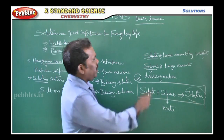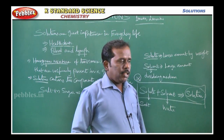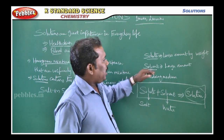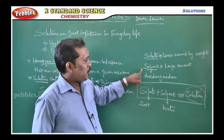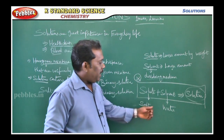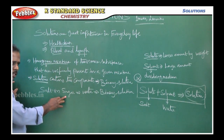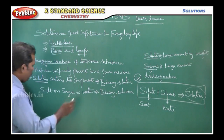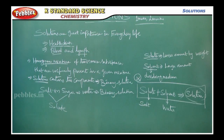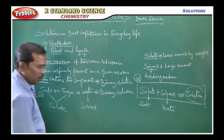A solution contains solute and solvent. In a solution, the component present in the lesser amount by weight is called the solute, and the component present in the larger amount is called the solvent. The solvent is the dissolving medium — water is an example. Salt and sugar mixed with water are called solutes; water is called the solvent.